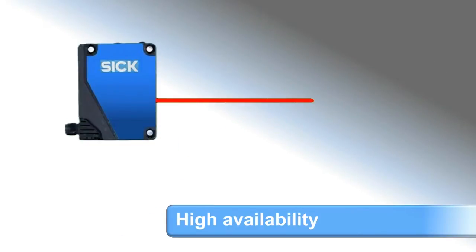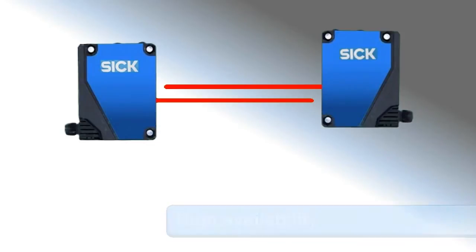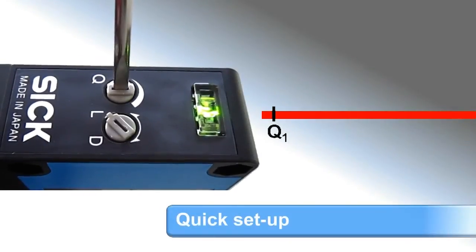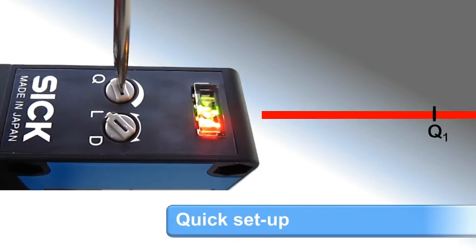And there's no crosstalk when sensors are mounted opposing each other. Its intuitive handling saves time, since the sensing range is adjusted with just one simple potentiometer. Thereby, commissioning is a snap.